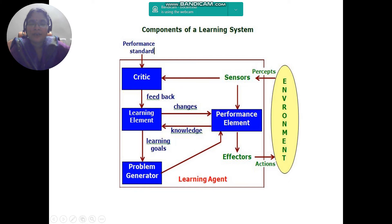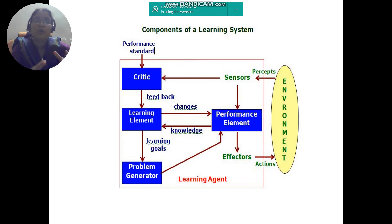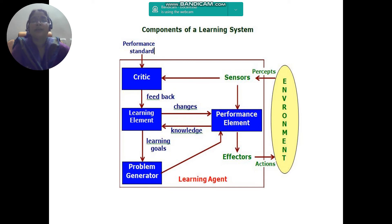The performance element is connected to the problem generator. What kind of actions are needed? What kind of actions should be added? All these components are interconnected to each other and they work collaboratively to improve the performance of the learning agent. The main goal of this system is to improve the performance of the learning agent.